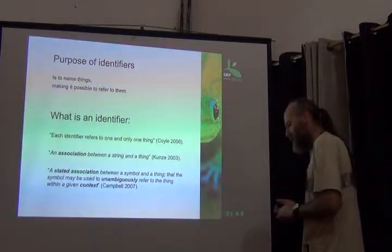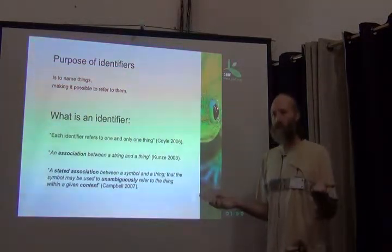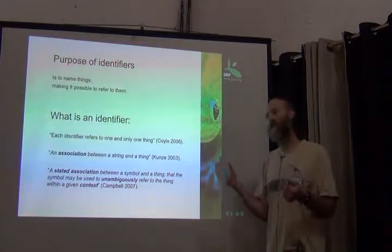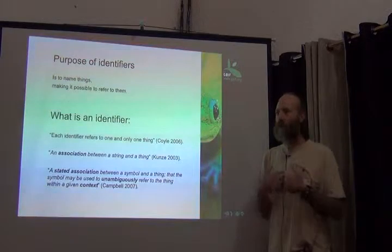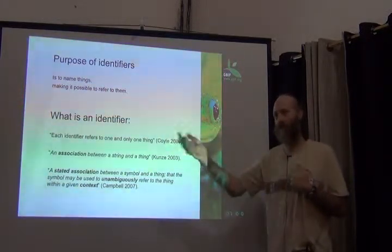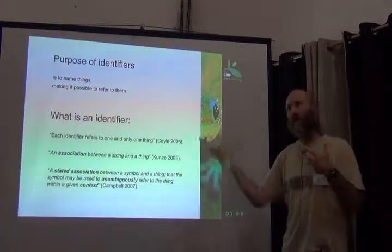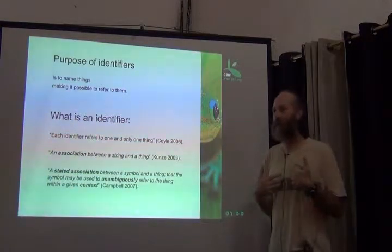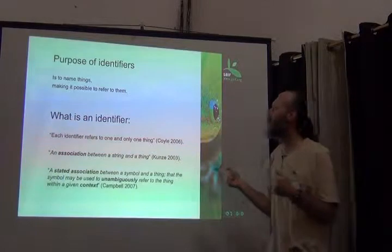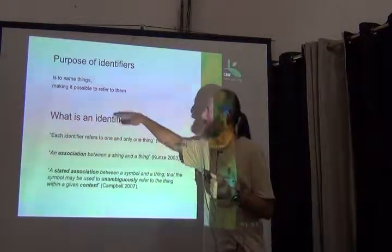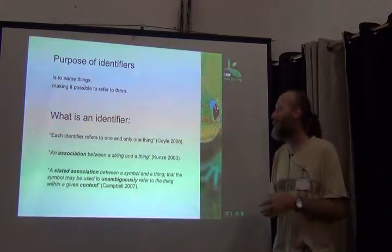Identifiers — you remember yesterday that I was discussing the relationships between two tables, and I discussed the idea of parent and child relationships. One of the things I talked about was identifying myself in relation to my father. He has an identity, I have an identity, and it's these identities that we use to relate to each other. Very basically, the purpose of an identifier is to name things and make it possible to refer to them.